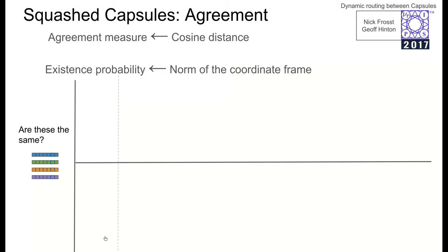The simplest method is using the cosine distance as the measure of agreement. Then, set the norm of the coordinate frame to the existence probability of the capsule. Remember, for each capsule we need an existence probability and a coordinate frame. This was introduced in a joint work with Nick and Jeff at NIPS 2017. So, why does this work? Or how does it work?